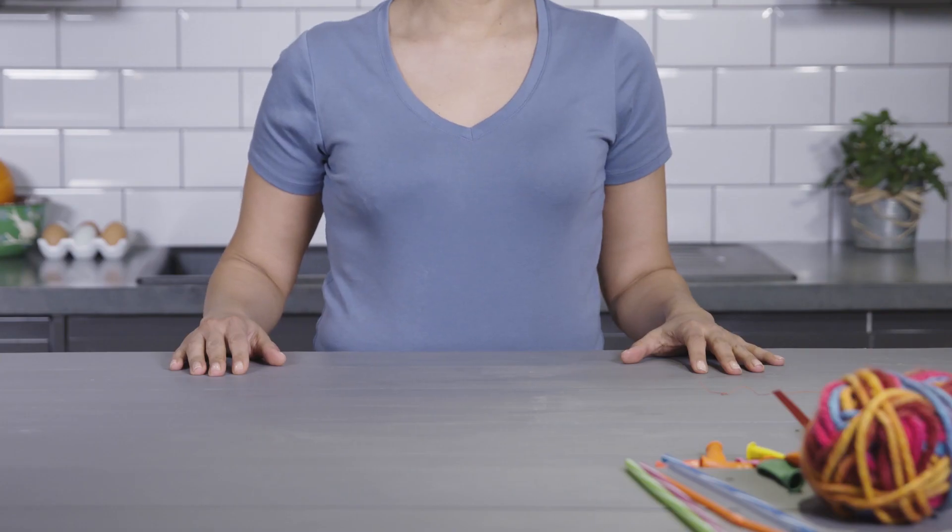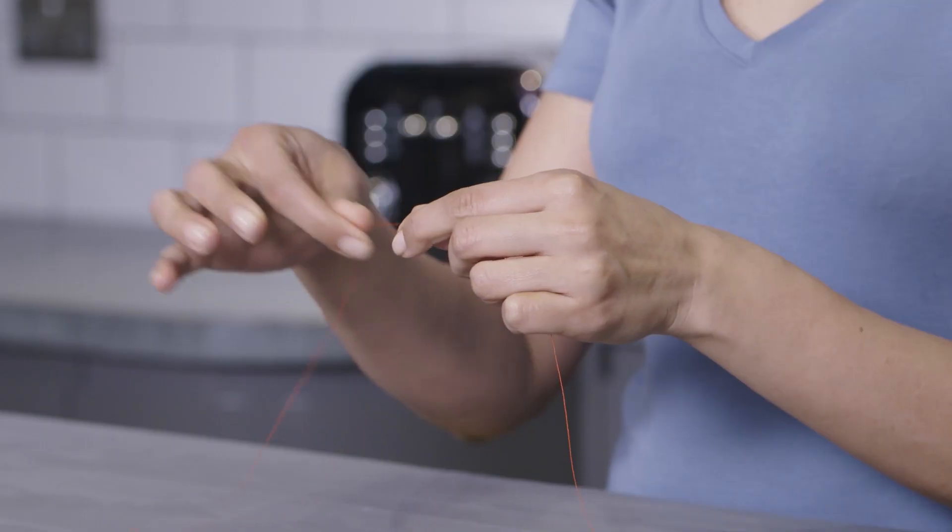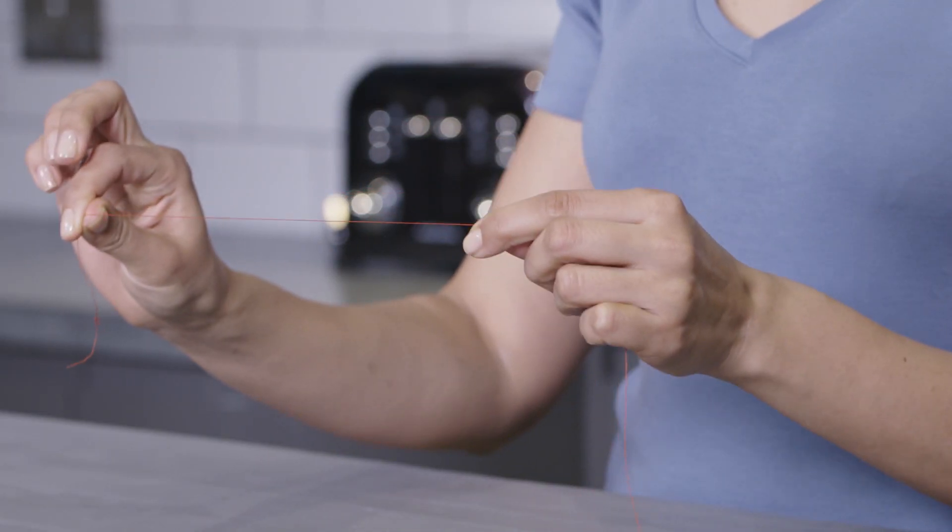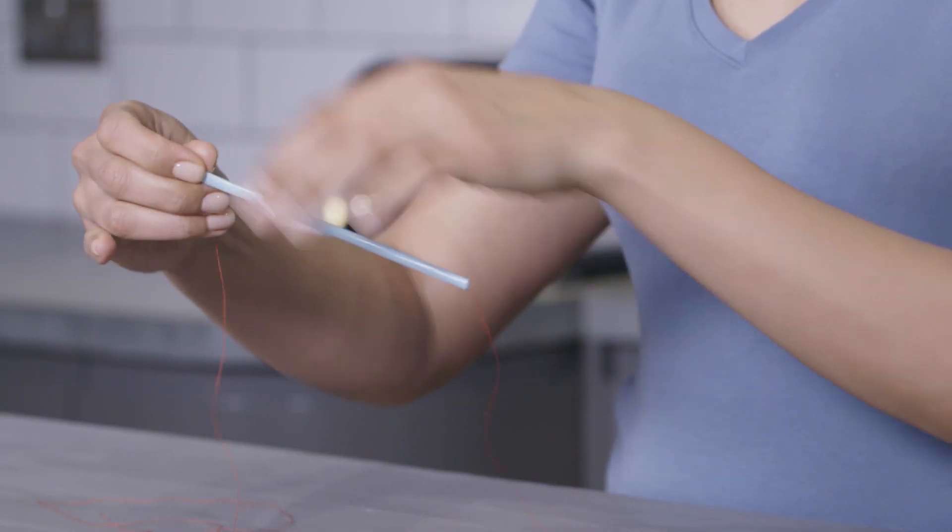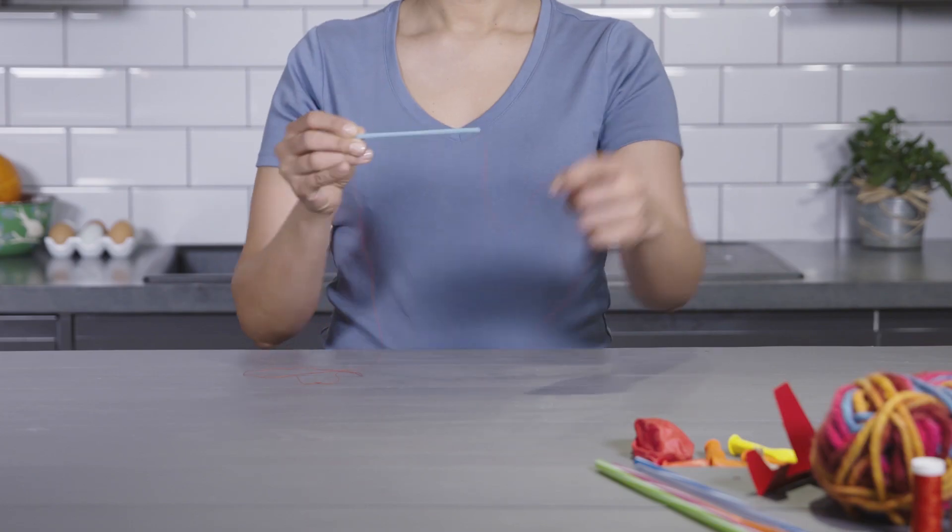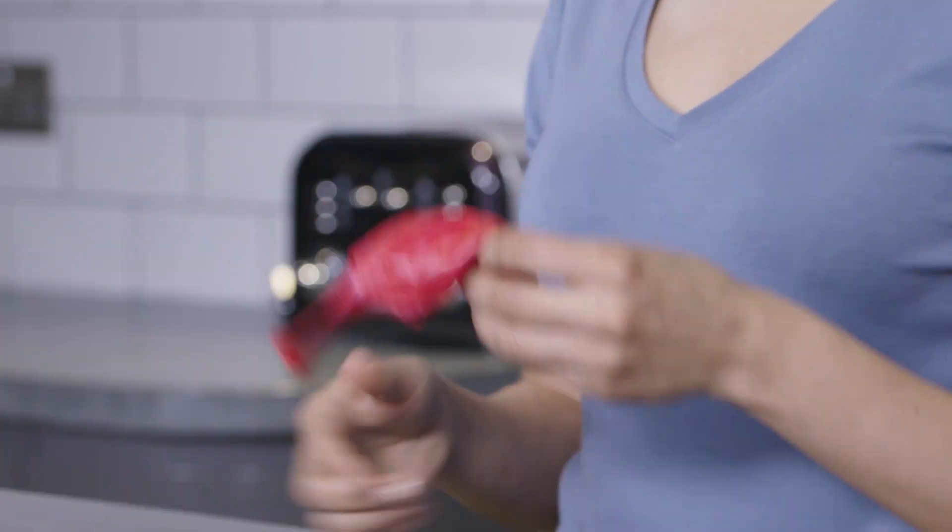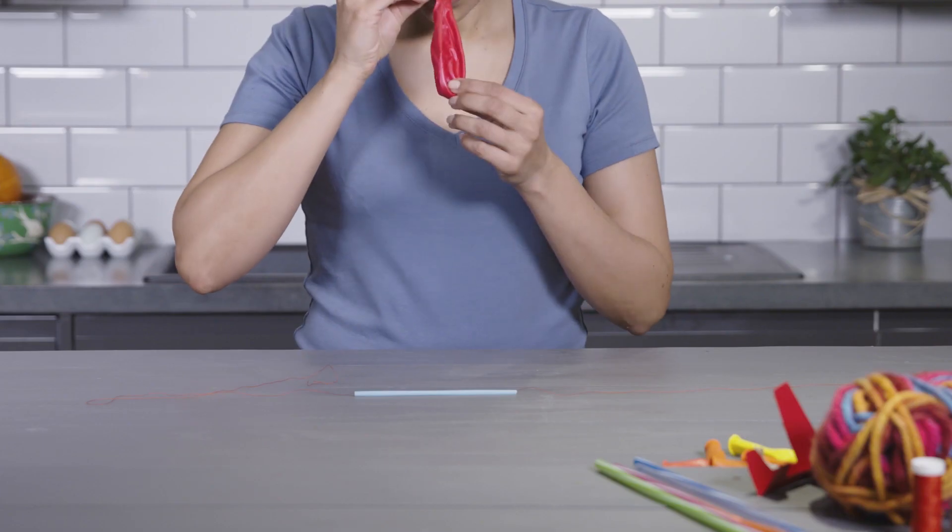For the first plane, we're going to use thread. You'll see it's quite thin but strong. We've already threaded it through the small drinking straw, like this. And a nice round balloon. I'm going for red. First, blow up the balloon.